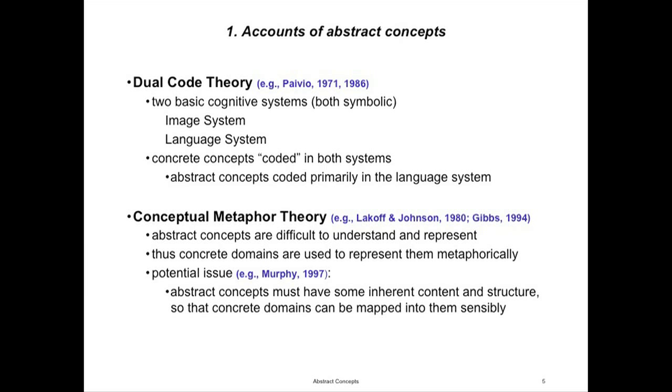At least since the cognitive revolution, the dominant account of abstract concepts has been Paivio's dual code theory. Paivio argued that there are two fundamental systems in the cognitive system: the image-based system and the language system, both symbolic. He argued that concrete concepts are coded in both systems — you have imagery-based representations of objects and also language-based representations. But abstract concepts are primarily represented in the linguistic system and don't have the same kind of image-based representations that concrete concepts have.